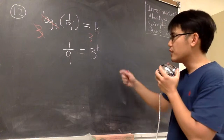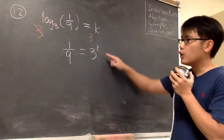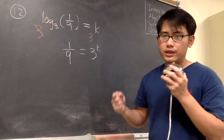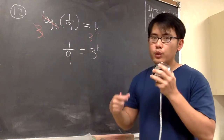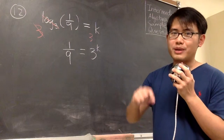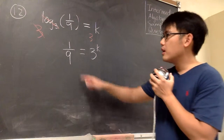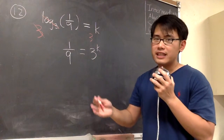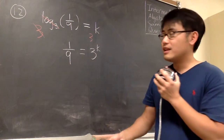Now we just have to figure out for what exponent k will make this equation true. To do this, we look at 1 over 9 and we will try to write that as 3 to some power. First, we look at the 9 — 9 is the same as 3 times 3, which is 3 squared.